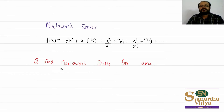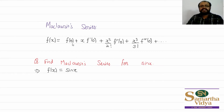The question asks us to find the Maclaurin series for the sine x function. Here, f(x) = sin x. We need f(0) first, meaning we substitute x = 0. So f(0) = sin(0) = 0.